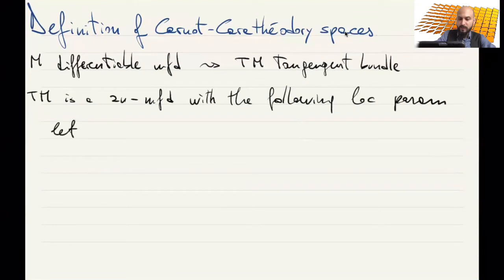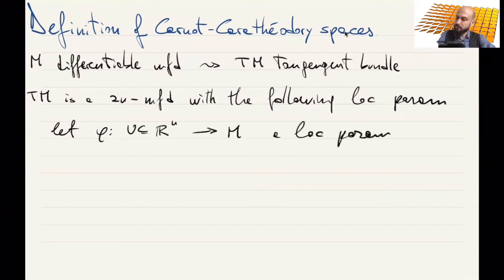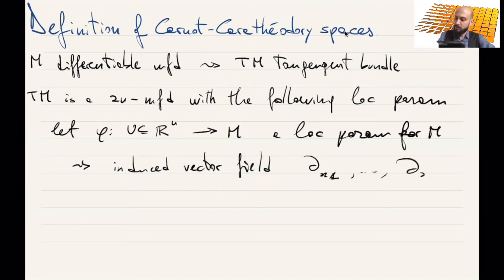If we have phi that is a parametrization of M, the local parametrization for M, then this parametrization induces vector fields that in coordinates given by phi, these are exactly the partial derivatives dx1 up to dxn. We can see this as vector fields on phi of u, a subset of M.